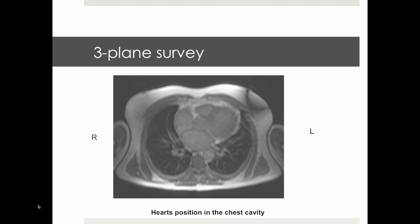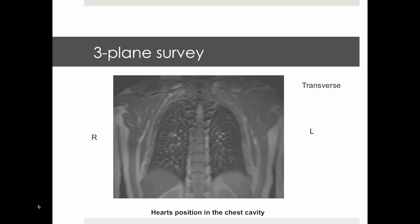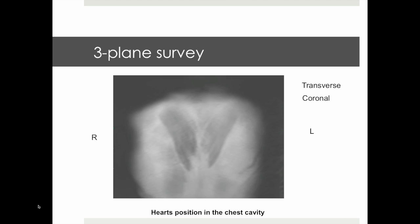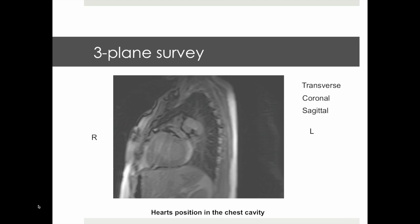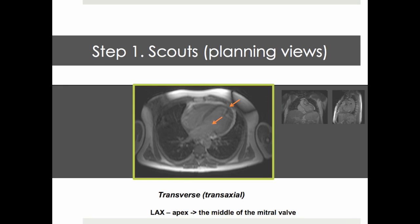The triplane survey serves to identify the heart's position in the chest cavity — in transverse, coronal, as well as sagittal orientation. We begin with a transverse view, in which we see most of the left ventricle, mitral valve and left atrium. We place our first imaging slides in line with the definition of the long axis of the left ventricle, which connects the apex and middle of the mitral valve.